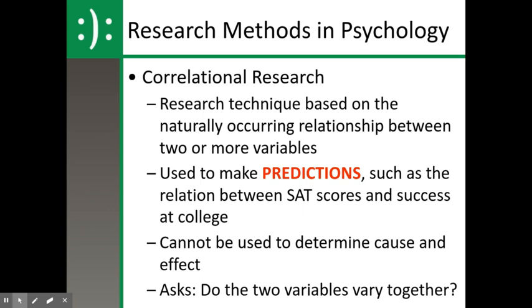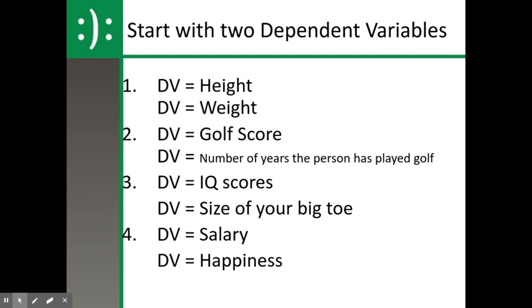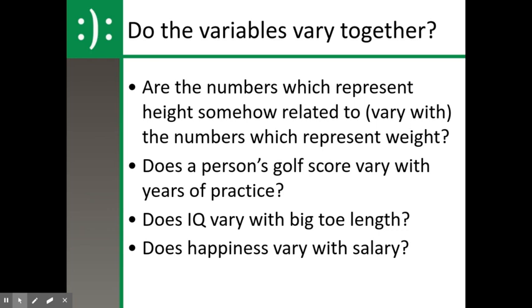We want to try to ask ourselves, do these relationships between variables, do they vary together? So in experimental, we like to manipulate one variable to see if it has an effect on the other. We hold everything else constant. Here, we can't really do that. So we look to try to find a relationship between the two. And the most common way we do this is by giving a survey. One of the things we wanted to make sure we were clear with, and we're going to do this today in class, we want to try to find some sort of relationship between them. We're going to start with two dependent variables. It could be height, weight, golf score, numbers of years the person has played golf, IQ score, size of your big toe, salary, happiness. They're two things we might think are related. And we might have done this based upon our descriptive research. Now we want to go ahead and think, is there a relationship between them? Are the numbers which represent height somehow related to weight?